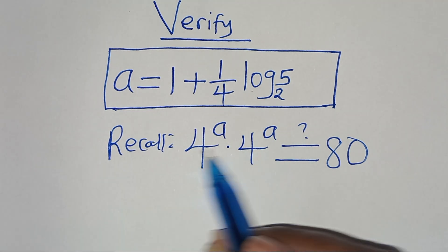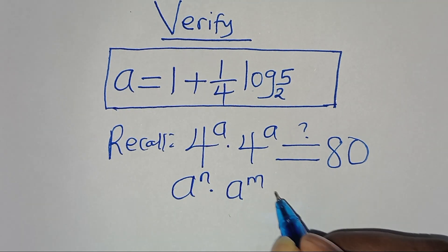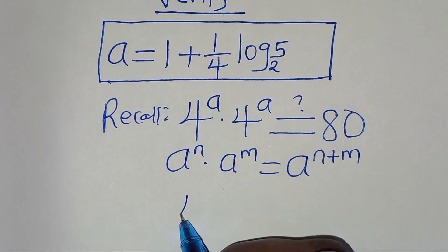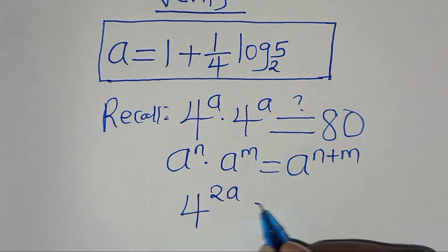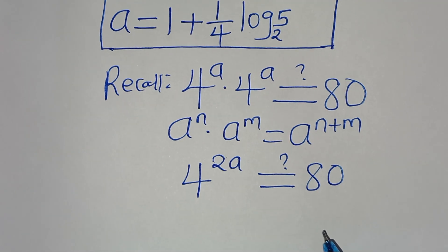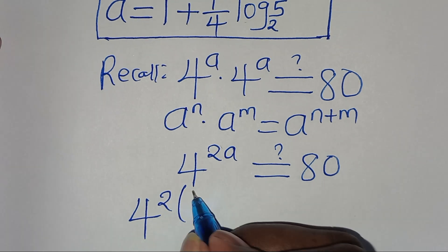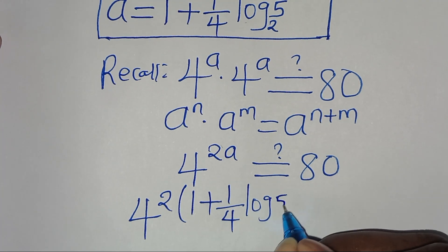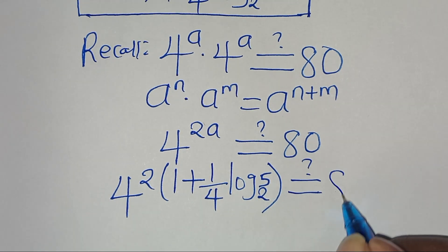We recall that 4^a × 4^a is in the form a^n × a^m = a^(n+m), giving us 4 to the power of 2a. Substituting a, we have 4 to the power of 2 times (1 plus one-quarter·log₂5), and this should equal 80.